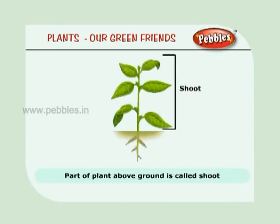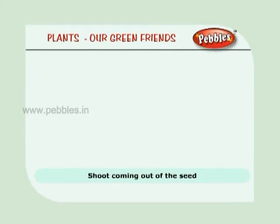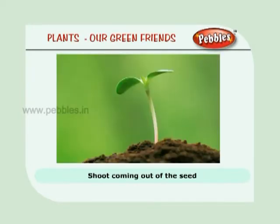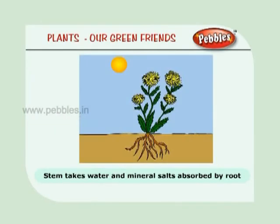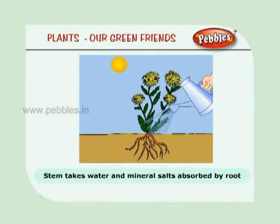The part of the plant which is above the ground is called the shoot. The main part of the shoot is the stem. It has many branches. It is very beautiful to see the shoot coming out of the seed. The stem takes the water and mineral salts absorbed by the roots to the different parts of the plant.